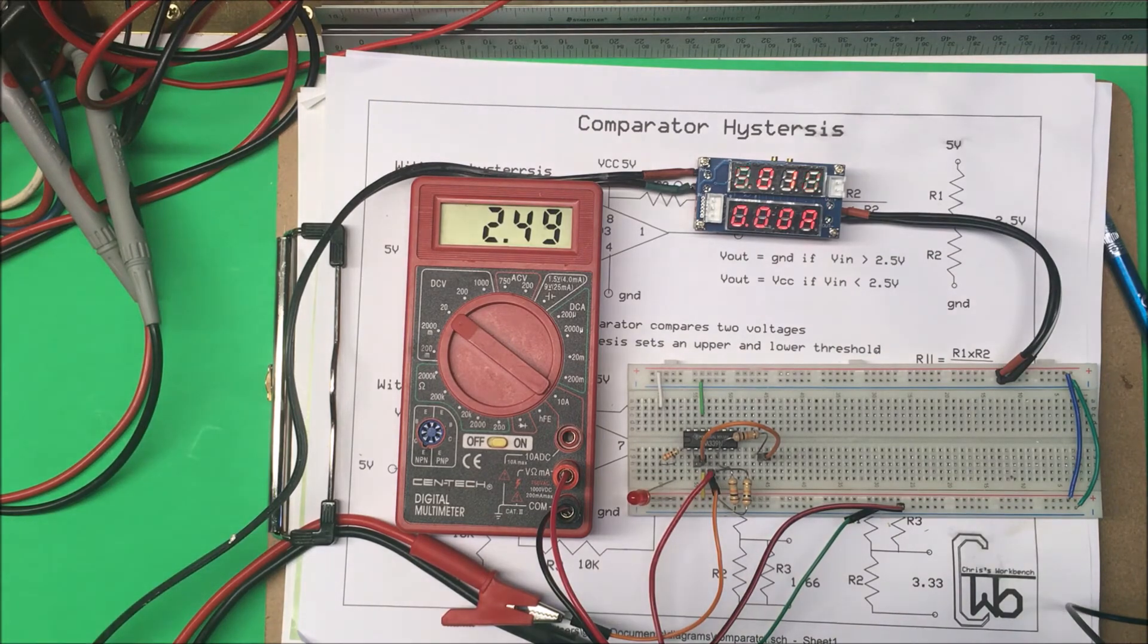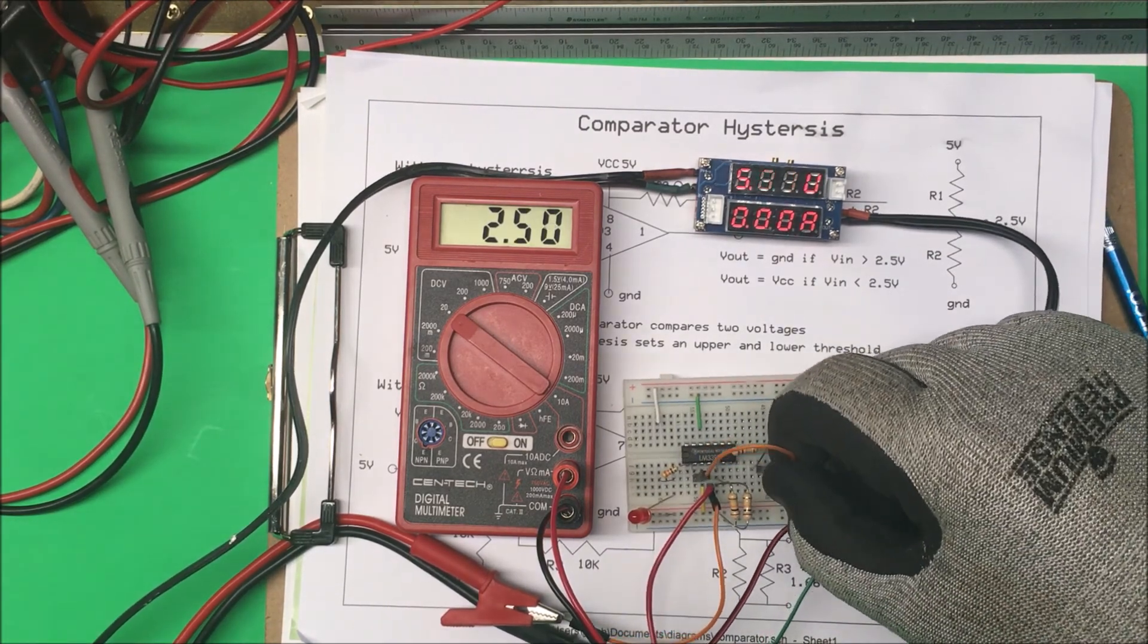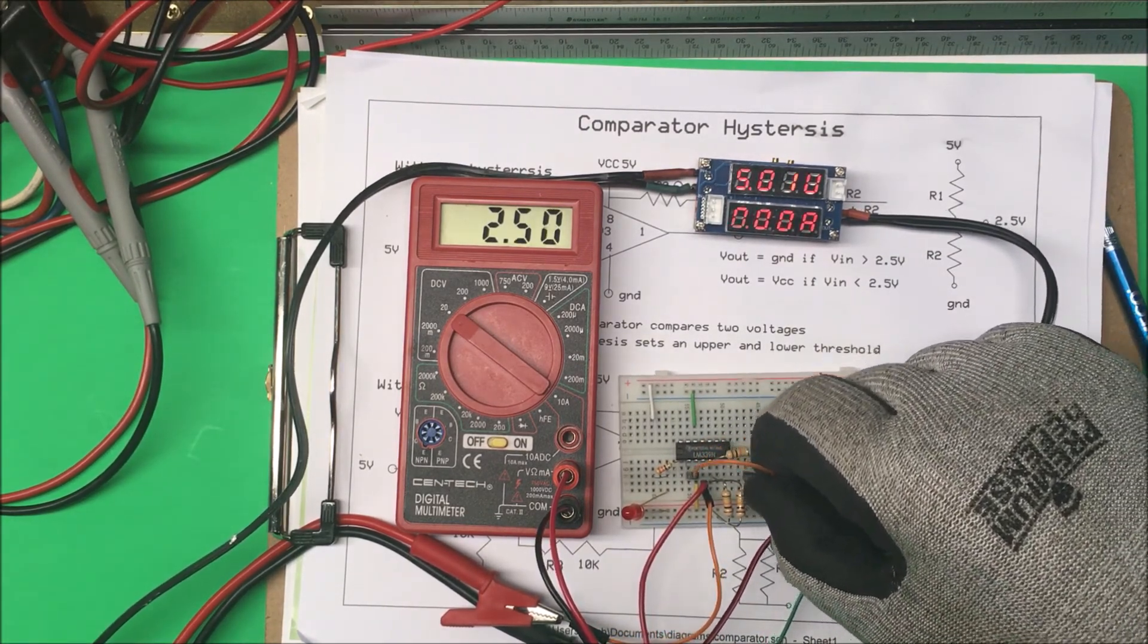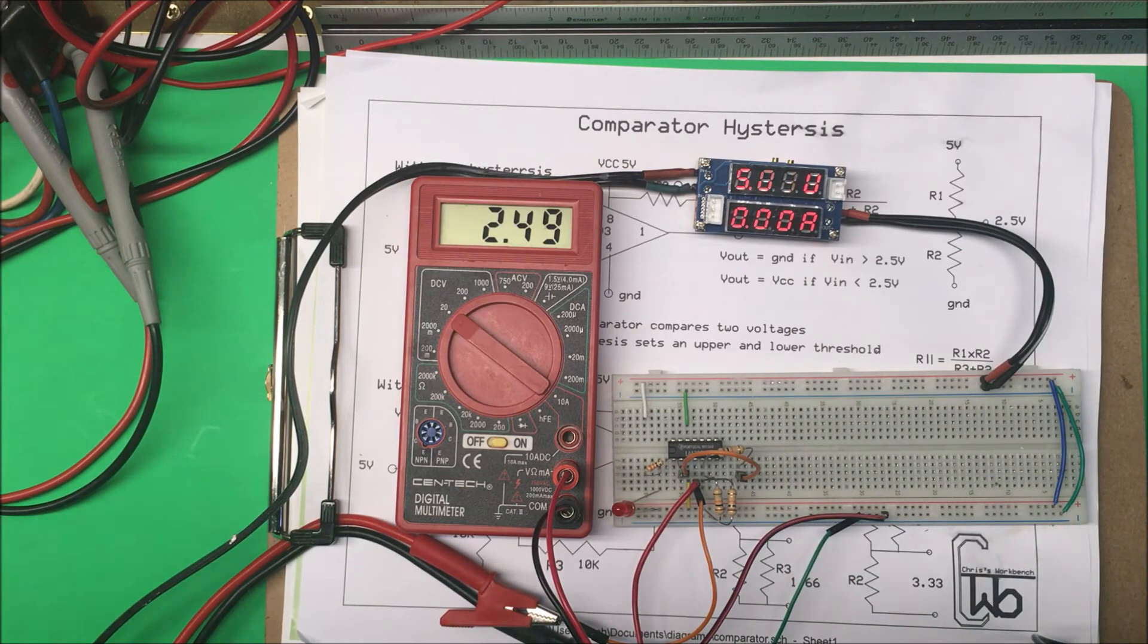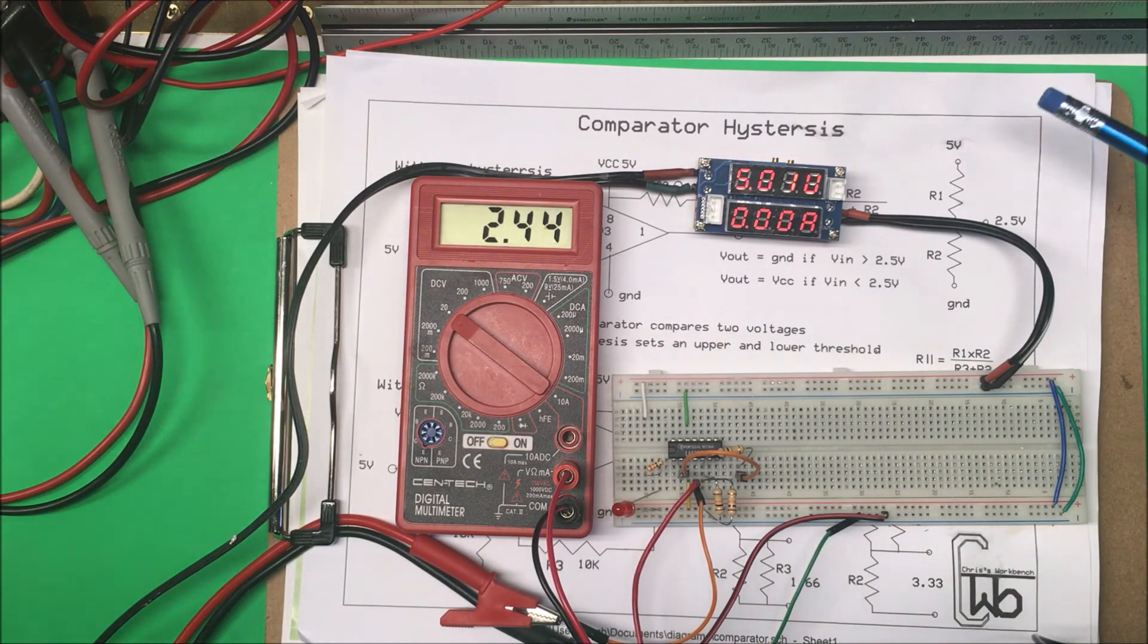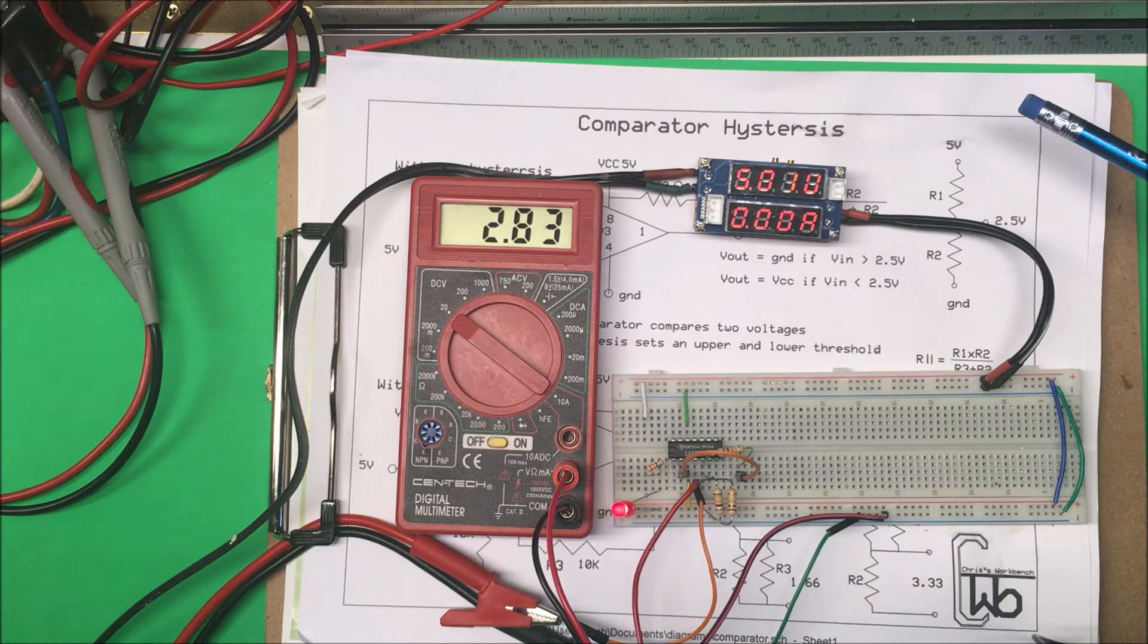So we're going to add some hysteresis. We're going to just add that other resistor in there. I've got it right here. I put that in there.